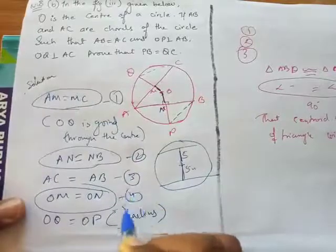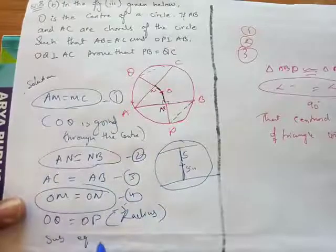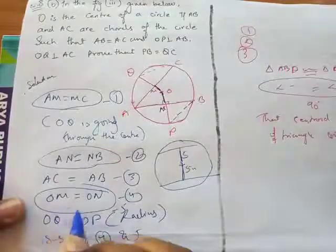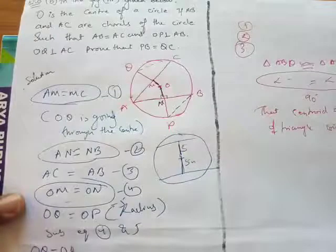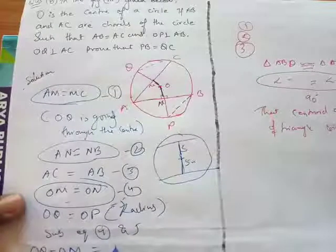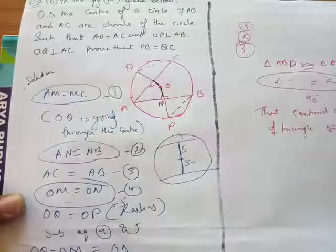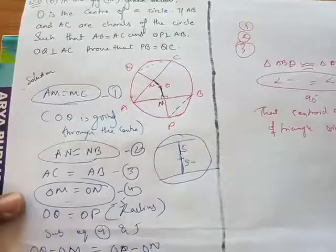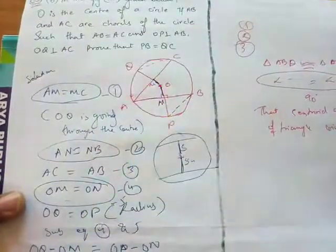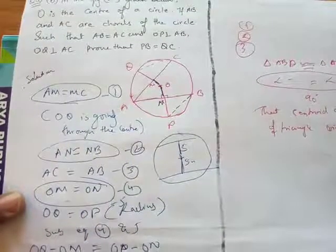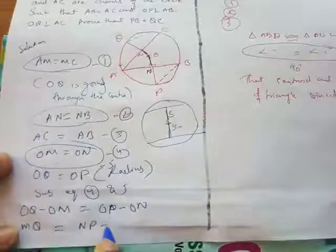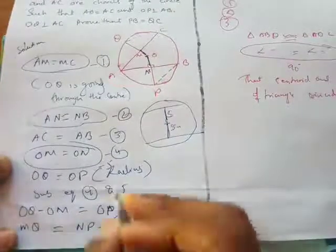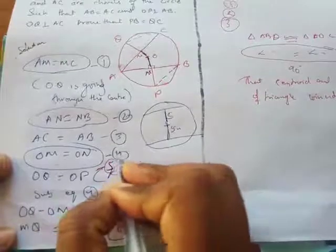Subtracting equation (4) from equation (5) — that is, subtracting OM from OQ and ON from OP — we get: OQ minus OM equals OP minus ON, which gives us MQ equals NP. This is our sixth equation. So equations numbered: AN=NB is one, AM=MC is two, OM=ON is three or four, OP=OQ is another, and MQ=NP is the sixth.